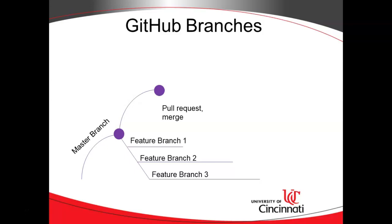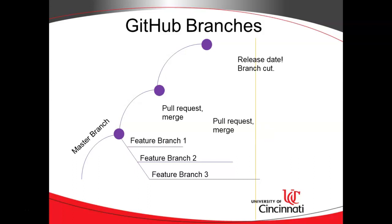Now feature branch two — that one took a little bit longer, but no problem, it finally finished up. We've met our definition of done, we're ready to merge this into master. So we start with a pull request, and then we do a merge, and the merge is what actually puts this onto our master branch. Now we still have one branch that's open, feature branch number three, but the release date comes and we have to do a branch cut and feature branch three is not ready. No problem — we'll go ahead and release what we have. In the old days, using one branch or an older version control system, we would have to wait until this third feature is complete. But with this concept of branching, we can merge only the ones that are complete and have met the definition of done. This last item, which missed the deadline or maybe was completed after the deadline, perhaps intentionally — not a problem. Let's save it for the next release.